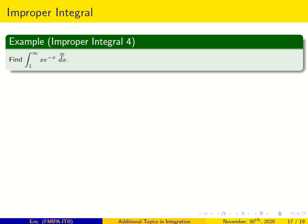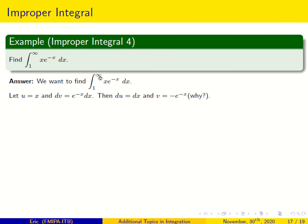This is the last example on improper integrals. We want to find the integral of x times e to the power of minus x dx from 1 to infinity. We cannot use a direct method or substitution, so we use integration by parts: let u equal x and dv equal e to the minus x dx.